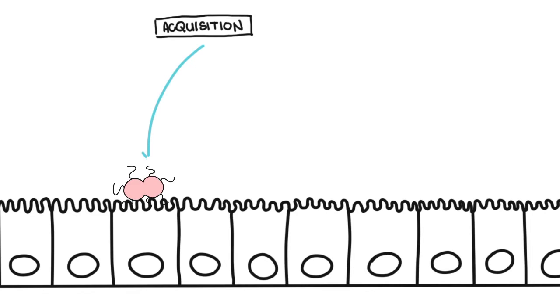The pili of the Neisseria gonorrhea attaches and adheres to the columnar epithelial cells. Adherence to the cells is also facilitated by opacity proteins, termed OPA proteins.